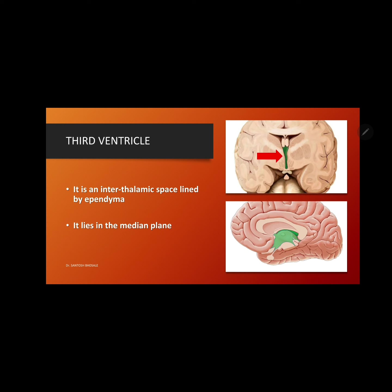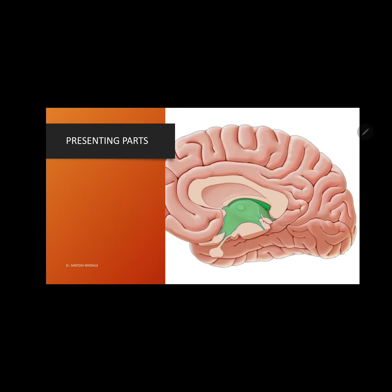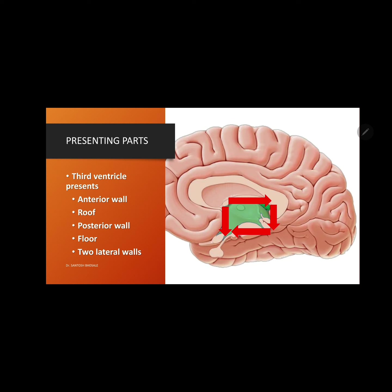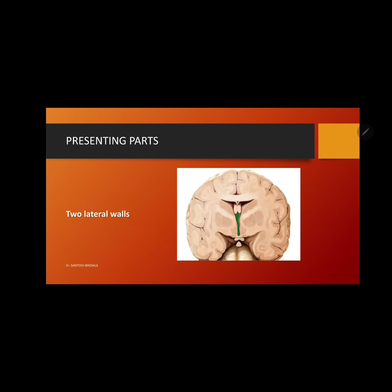The third ventricle presents the following features: it has an anterior wall, a roof, a posterior wall, a floor, and two lateral walls. You can see one lateral wall in the sagittal section — that is the lateral wall of the third ventricle. The two lateral walls are formed by the two thalami, which is why it is also known as the interthalamic space.